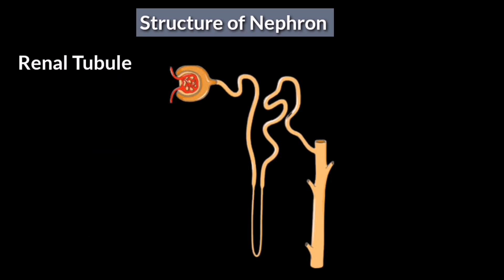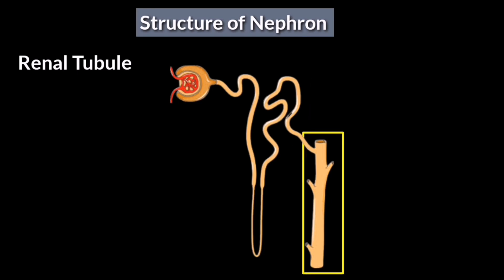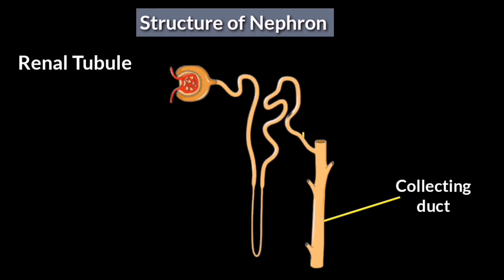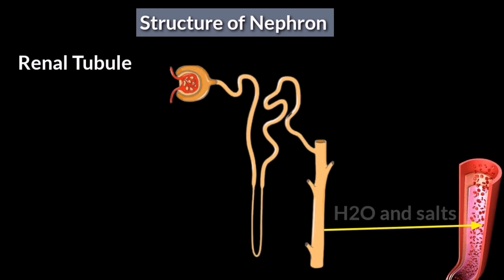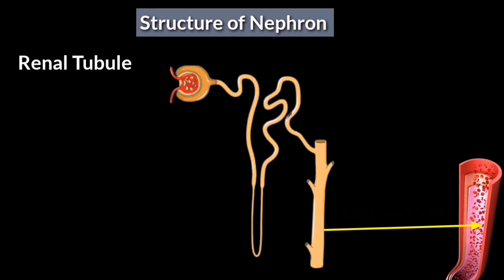The concentrated urine then moves through the renal tubule and into the collecting duct. As the urine passes through the collecting duct, water reabsorption occurs, further concentrating the urine and conserving water within the body.